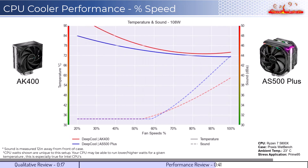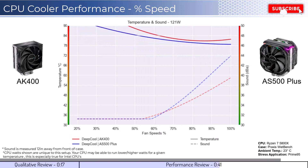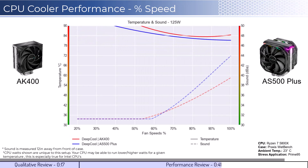Next, we will look at the CPU overclocked to 125 watts. This shows that the AS500 Plus retains slightly better cooling performance over the AK400.